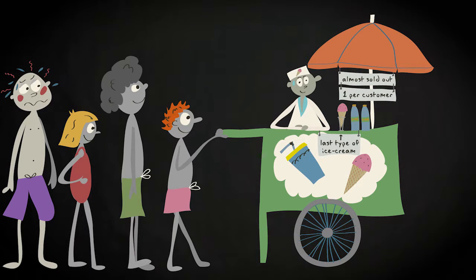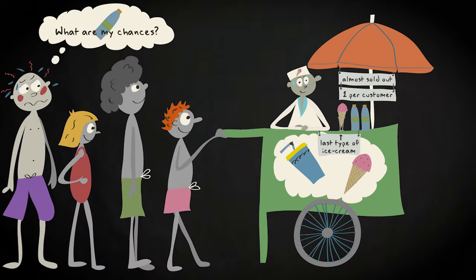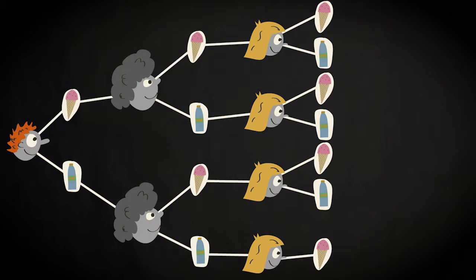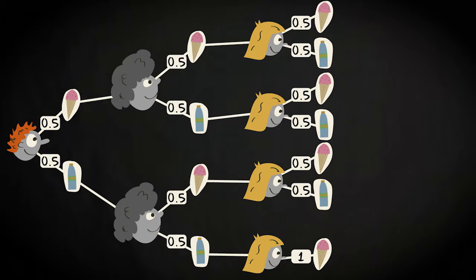While waiting you are figuring out your chances to acquire your drink and you make up this tree diagram. The diagram shows that you assume that there is a 0.5 probability for choosing either ice cream or soft drink by each customer.